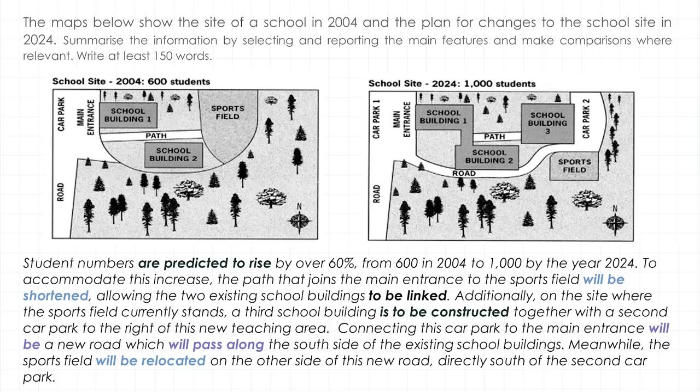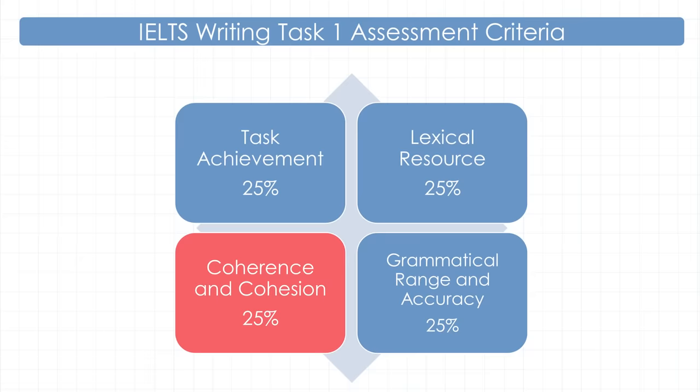On to our final criterion: coherence and cohesion. Your answer is coherent if it's logically organized — that's your structure, your paragraphs. Your answer is cohesive if your sentences are linked together and there is a smooth transition from one idea to the next.